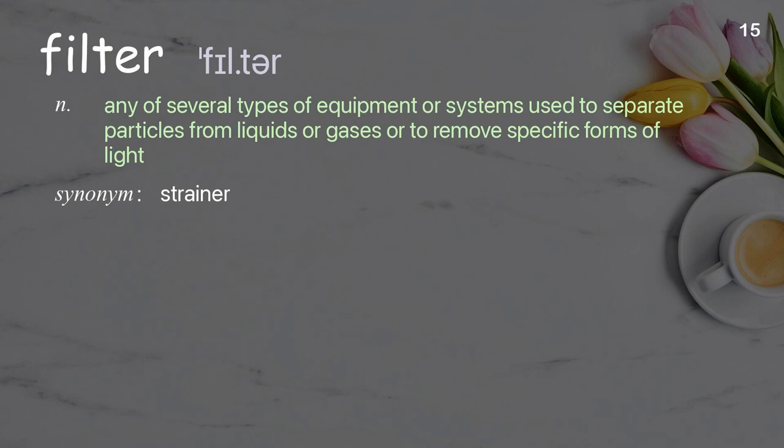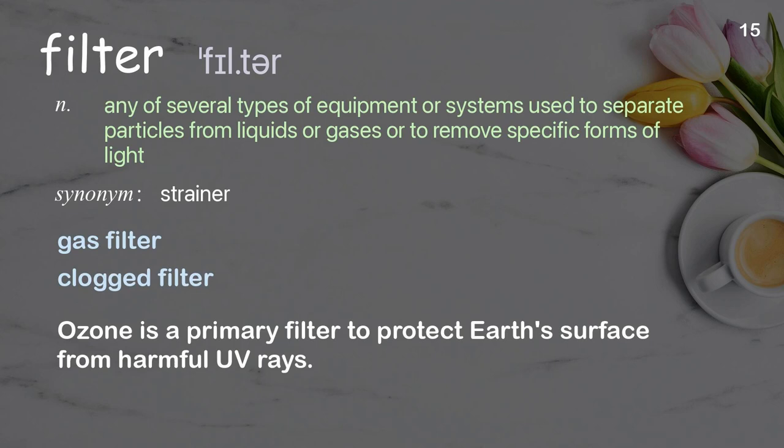Filter: any of several types of equipment or systems used to separate particles from liquids or gases, or to remove specific forms of light. Examples: gas filter, clogged filter. Ozone is a primary filter to protect Earth's surface from harmful UV rays.